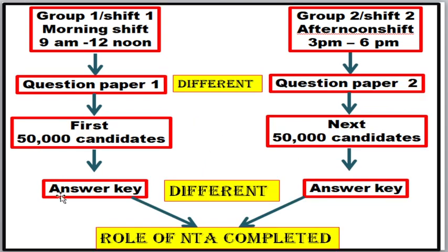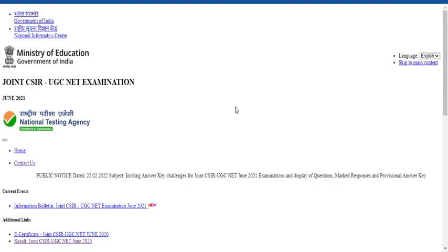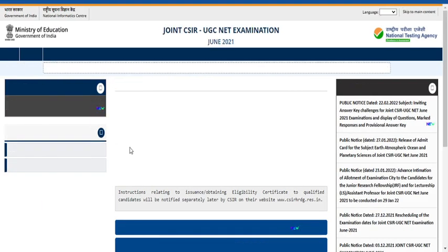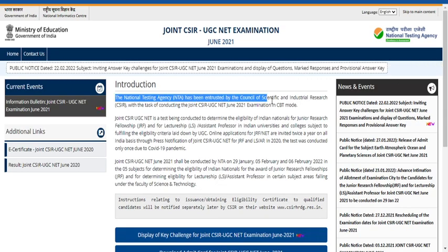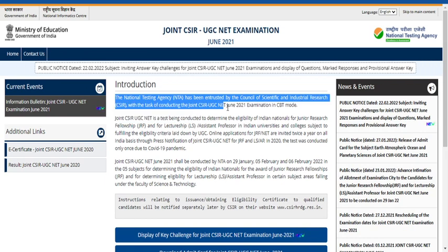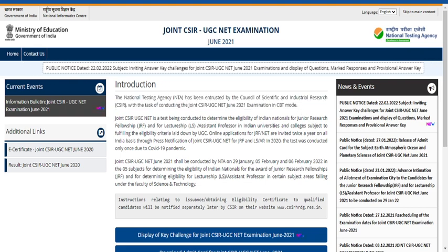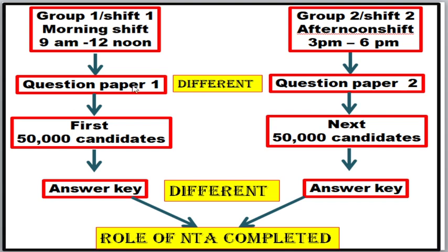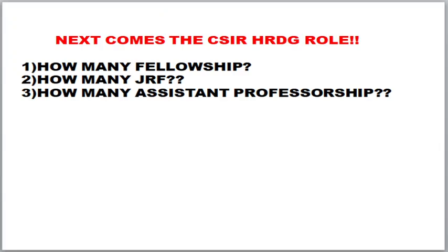Up to releasing the answer key, the role of NTA is completed. NTA — National Testing Agency — has been entrusted by the Council of Scientific and Industrial Research to conduct the joint CSIR-UGC NET examination June 2021 in CBT mode. Since CSIR manages various different schedules and could not conduct the examination alone, they gave the role to NTA. NTA's role is to conduct the test — book examination centers, open the application portal, collect fees, answer queries — and after releasing the answer key, NTA gives the final result to CSIR.